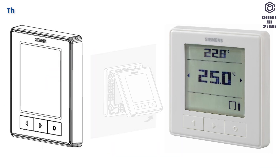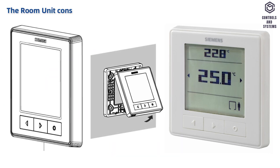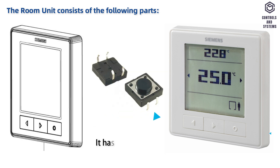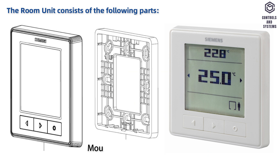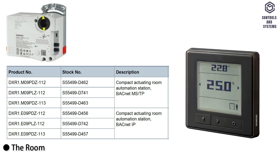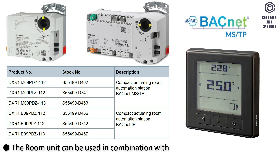Device Overview. The room unit consists of the following parts: this room unit has a front module with an LCD display, no backlight, and three buttons for interactive operation. Mounting frames are integrated into the back of room units. The room unit can be used in combination with DXR1 room automation stations only.